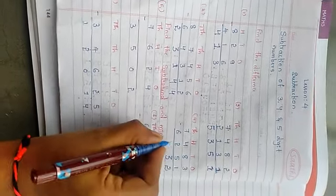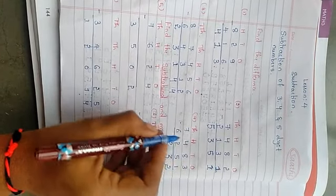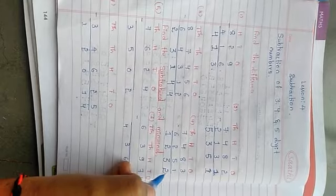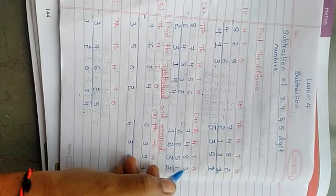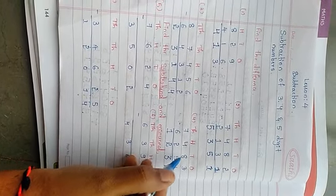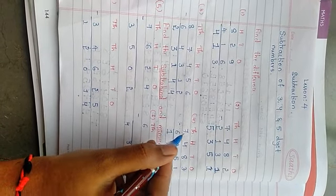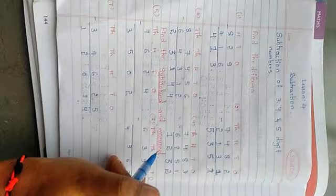4 minus 2 is 2, 7 minus 6 is 1. Again cross check this one: 2 plus 1 is 3, 5 plus 3 is 8, 2 plus 2 is 4, 1 plus 6 is 7. Yes, this answer is also correct.